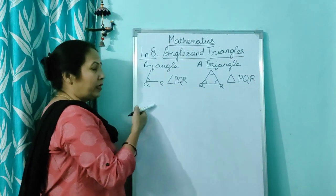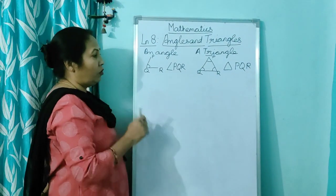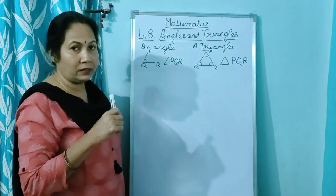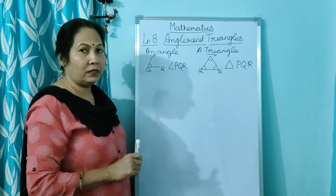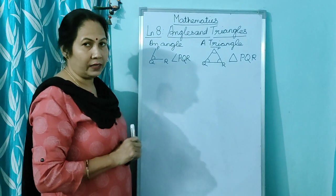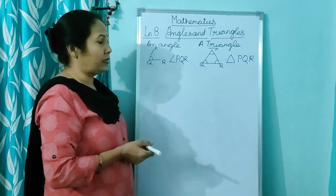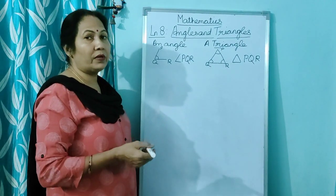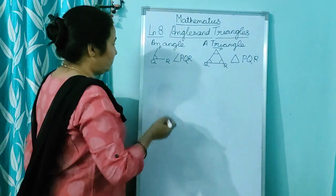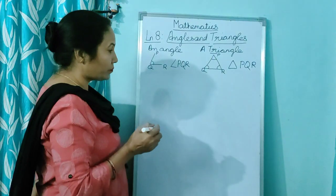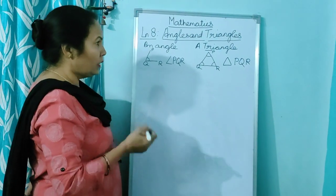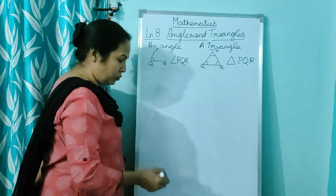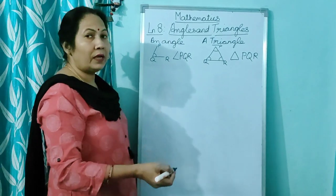Now children, in angle you have done acute angle, obtuse angle, straight angle, and right angle. Now these angles, when they are closed, they become a triangle. And now you will read triangles according to their angles.